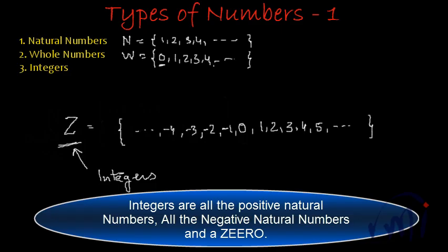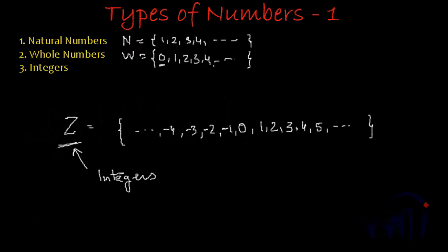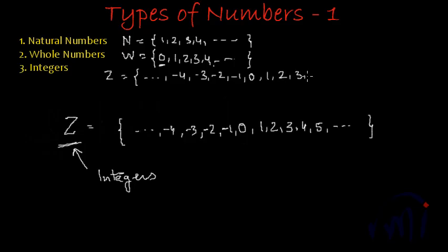So the set of negative natural numbers, positive natural numbers and 0 together is called the set of integers, denoted as capital Z. It has negative integers: minus 4, minus 3, minus 2, minus 1, then 0, and then positive integers: 1, 2, 3, 4, 5 and so on. If you look carefully, the difference between two consecutive elements of the set is 1. The common difference is 1, and this is common across all these sets.